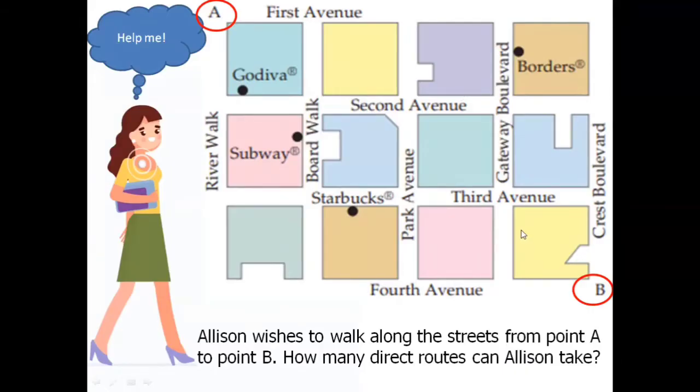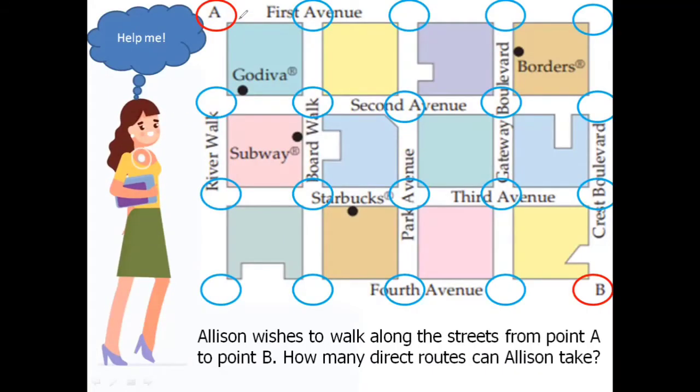First, we're going to label all the intersections in our map. Let's start from point A. If Allison wishes to go to this route, that is one route. If she wanted to go to this route, that is also another route. Here is also another route, and another route. Now, if she wanted to go downwards, so from point A going here, that is also another route. From point A going here, that is also another route, and another one. So we had already labeled our intersections there with one route.